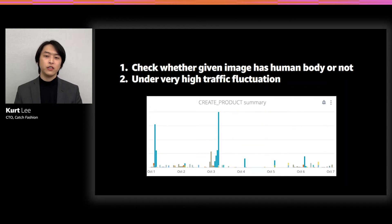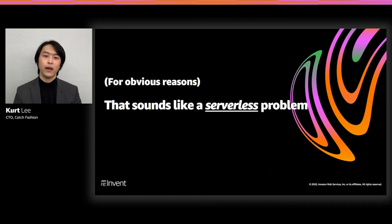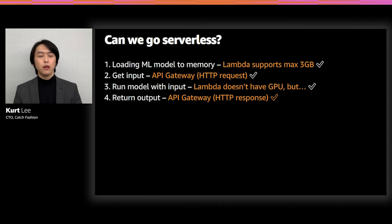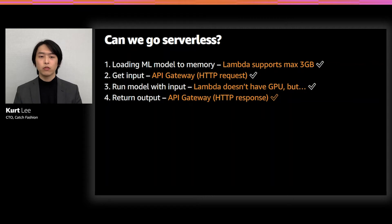For obvious reasons, we thought of this as a serverless problem: there's a task that has to be done, the task is pretty straightforward, but there is really high traffic fluctuation. We want to handle this in an automatic, on-demand manner without preserved resources. So we made a checklist about whether we could go serverless. We were trying to have a simple ML model that does inference — does this image include a human body or not? First: can we load the model into memory? Lambda supports a maximum of 10 gigabytes of memory, and for some models this isn't enough, but for most models it's more than enough.